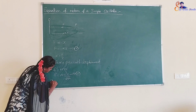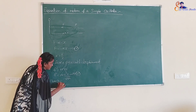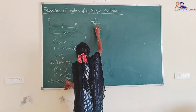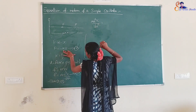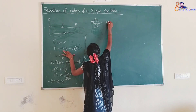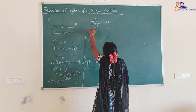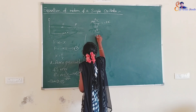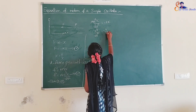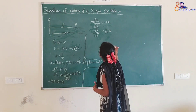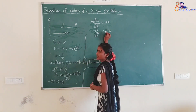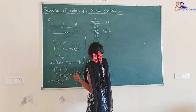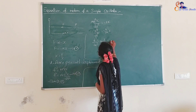From equations 1 and 2, we equate them: m·(d²x/dt²) = −kx. Dividing both sides by m: d²x/dt² = −(k/m)·x. Moving terms across: d²x/dt² + (k/m)·x = 0. This is the differential equation of motion for a simple harmonic oscillator.